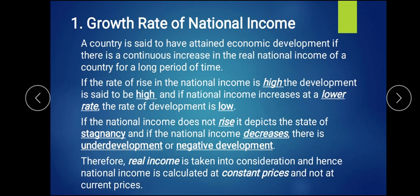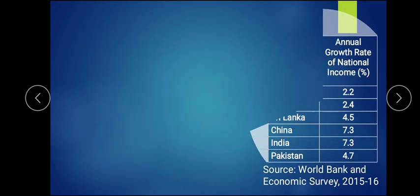To calculate real national income, we have to consider constant price — that is the base year price — and not the current year price. This is how we calculate real national income: we go with base year or constant price. Based on that, if the growth rate is high, we say there is high development; if low, low development; if constant, stagnancy; and if negative, the country is going into underdevelopment. National income is always calculated on the basis of constant price.